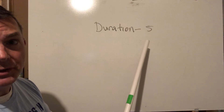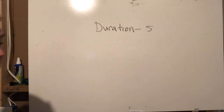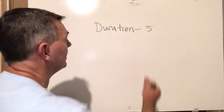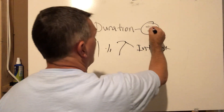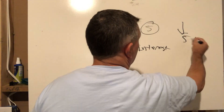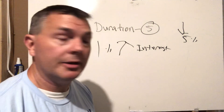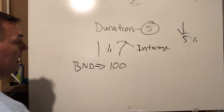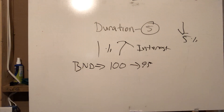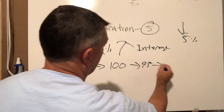What duration means: if it's a duration of five, then for every 1% interest rates rise, the price of the bond drops by 5%. It's literally that simple. So if BND is trading at 100 and interest rates go up by 1%, the price will now be 95 — it drops by 5%. If interest rates go up 2%, the price goes down to 90. That's how it works.